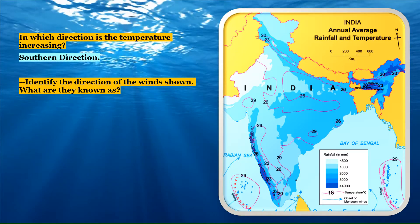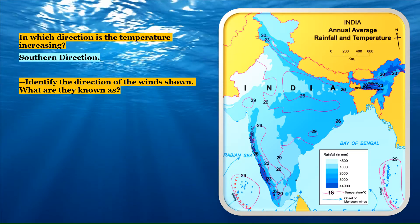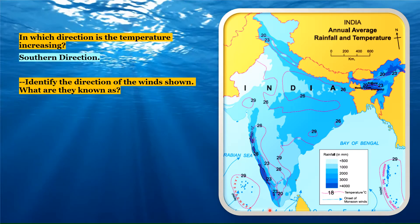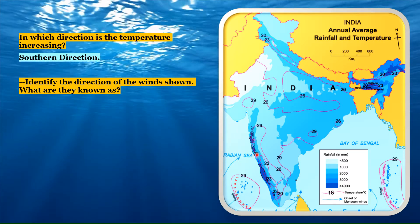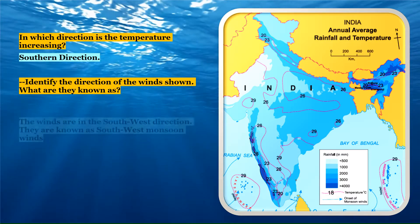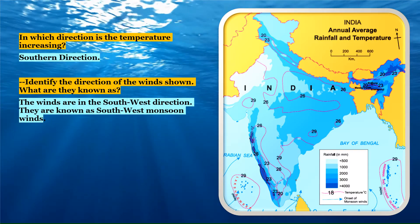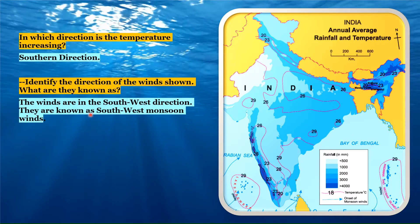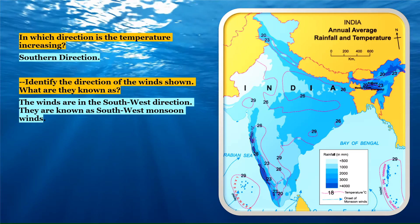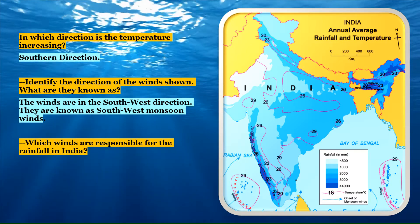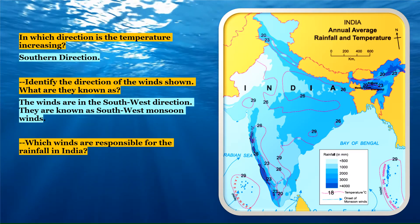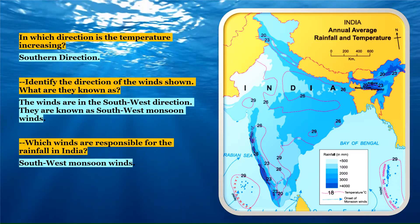The next question: identify the direction of the winds shown and what they are known as. These are the winds blowing from the south and the west — so the direction is southwest. They are known as southwest monsoon winds. India gets rainfall basically from the southwest monsoon winds. The next question: which winds are responsible for rainfall in India? The winds responsible for rainfall in India are the southwest monsoon winds.